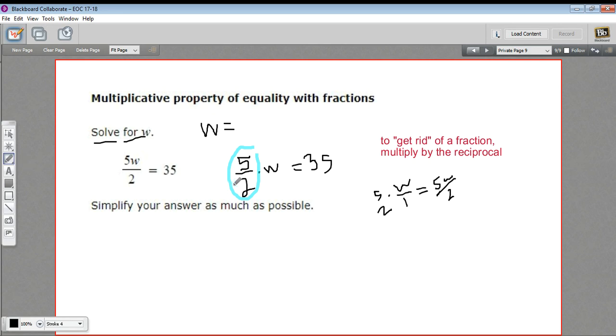The reciprocal is just the fraction upside down. So we would be multiplying by 2 over 5 instead of 5 over 2. When you do that, everything cancels. The 2s cancel, the 5s cancel. This all resolves to 1. 1 times w is just w. So that's fantastic.